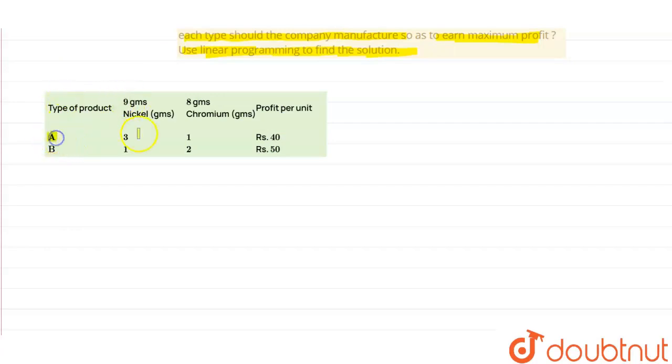So type of product A: 3 grams nickel, 1 gram chromium, profit per unit 40 rupees. And B: 1 gram nickel, 2 grams chromium, rupees 50. So this is very important to know - understand first of all make the table then proceed.